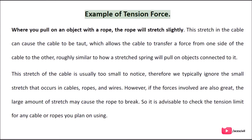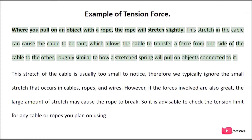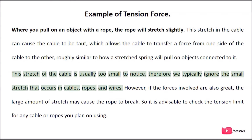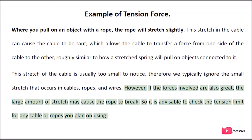As an example of tension force: when you pull on an object with a rope, the rope will stretch slightly. This stretch in the cable causes it to become taut, which allows the cable to transfer a force from one side to the other — roughly similar to how a stretched spring pulls on objects connected to it. This stretch is usually too small to notice, so we typically ignore the small stretch that occurs in cables, ropes, and wires. However, if the forces involved are too great, the large amount of stretch may cause the rope to break. So it is advisable to check the tension limit for any cable or rope you plan on using.